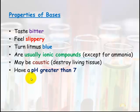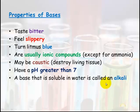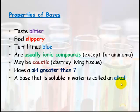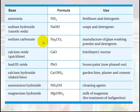Bases have a pH greater than seven — above seven — while acids are below seven. A base that is soluble in water is called an alkali, so these species can be described as alkaline or basic. It can be called an alkali if soluble in water, or simply a base if not soluble in water. It is a proton acceptor — it accepts a hydrogen ion.